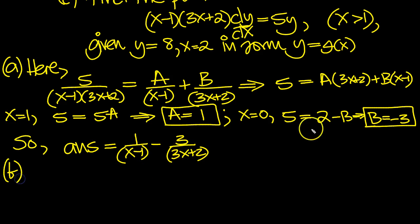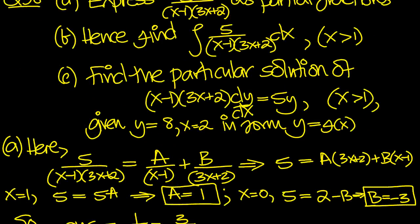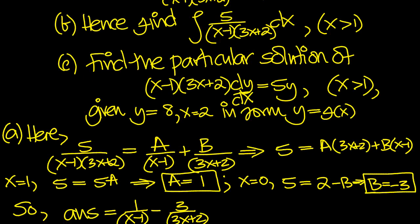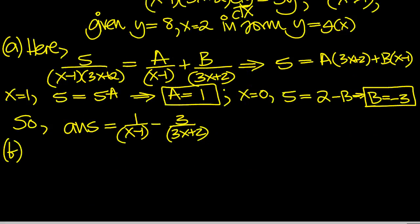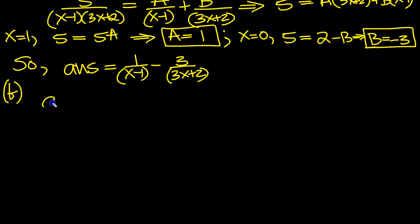Now part B. Let's have a look at that. Hence find this integral of the thing that was above. So answer is equal to the integral. And instead of the integrand, we can put this in. 1 over the x minus 1, because it's the same as, minus 3 over 3x plus 2 dx.